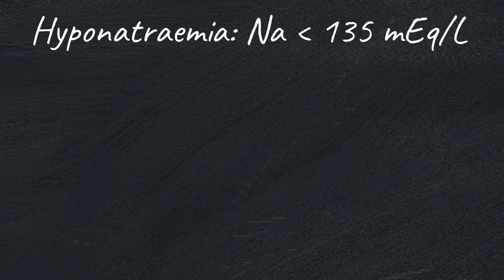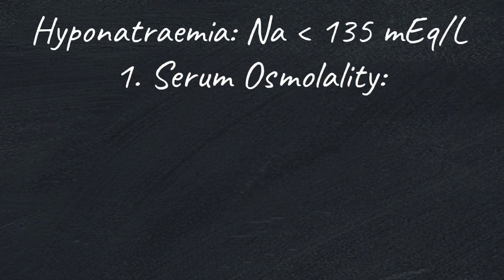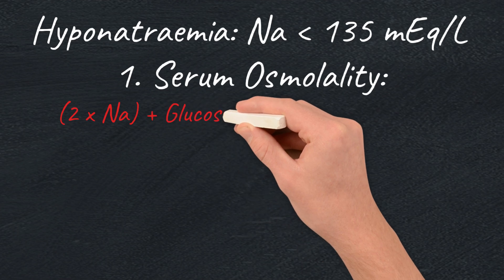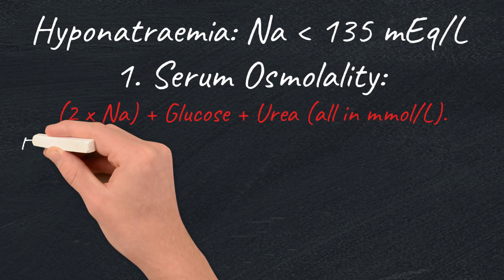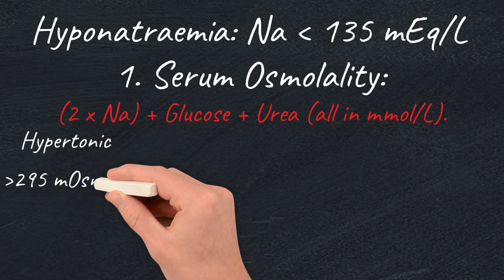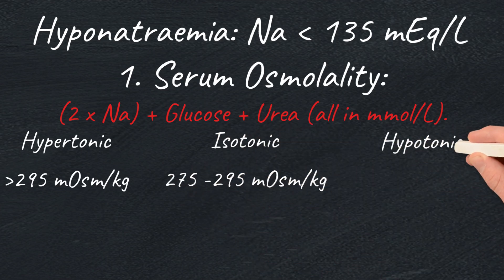If you find hyponatremia, do two things. First, check the patient's serum osmolality, which is a simple measurement of the concentration of solutes in the blood. Either send for a lab analysis or manually calculate it with the formula: two times sodium plus glucose plus urea, all in mmol per litre. If the total is more than 295 milliosmol per kg, it's hypertonic. 275 to 295 is isotonic, and less than 275 is hypotonic.